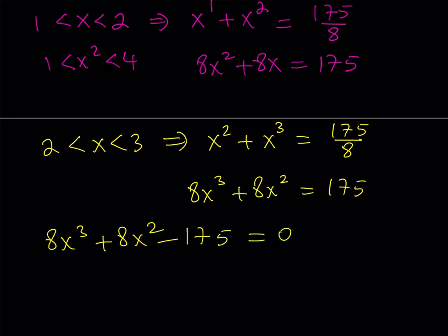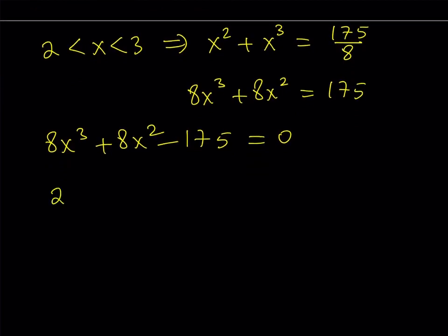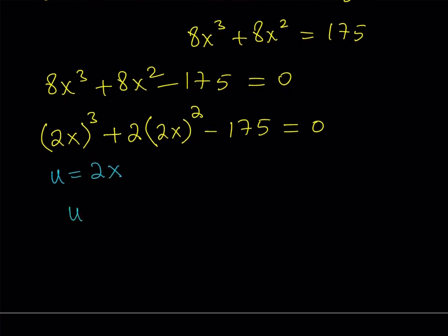Now, I know some of you are going to talk about the rational root theorem and divisors. But I want to make this equation even easier to solve by making it monic. Monic means the leading coefficient is 1. Wouldn't that be nice - instead of 8x^3, if we had x^3? Then you could just look at the divisors of 175. Here's how: write 8x^3 as (2x)^3 and 8x^2 as 2(2x)^2. Now the equation becomes monic if we make a substitution: let u = 2x. This gives us u^3 + 2u^2 - 175 = 0.